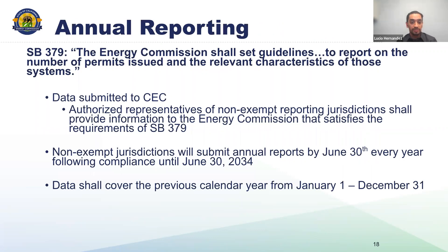Senate Bill 379 sets requirements for the Energy Commission to adopt guidelines pertaining to annual reporting on the number of permits issued and the relevant characteristics of those systems. We published draft guidelines in December and held a one-month comment period. We're currently reviewing our proposed final guidelines and intend to bring this to an Energy Commission business meeting for adoption next month. To submit data to the CEC, we plan on utilizing an online data portal maintained by the Energy Commission, accessible through our SB 379 webpage.